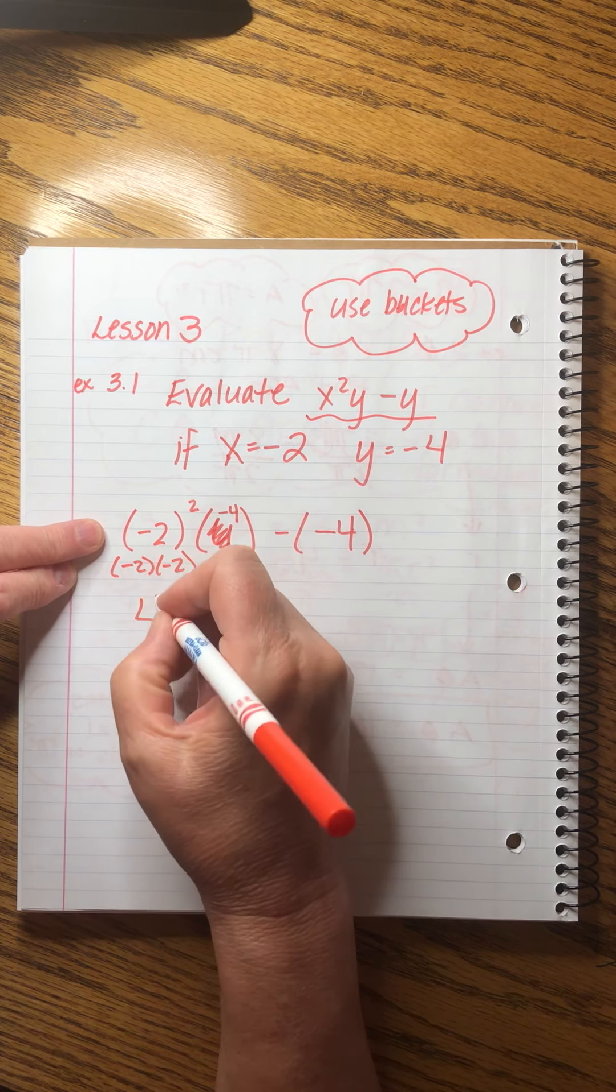So this is minus 2 times minus 2, so that would be positive 4. And then we multiply it by minus 4. And then this can be simplified. All right, so now I'm going to clean this up. That would be minus 16 plus 4, and that's minus 12. Final answer. Yay!